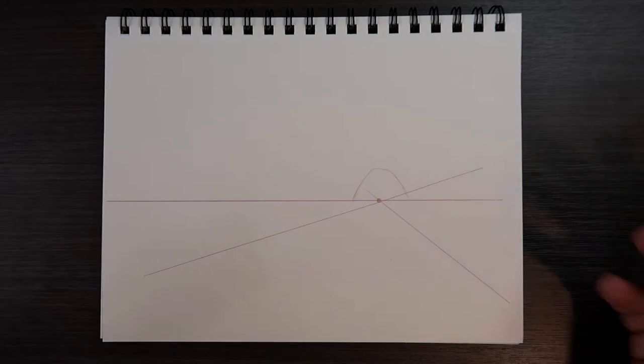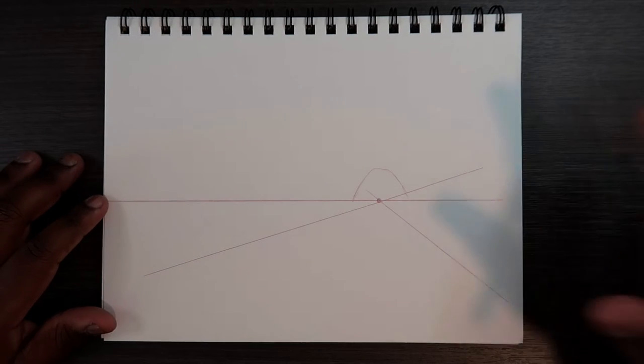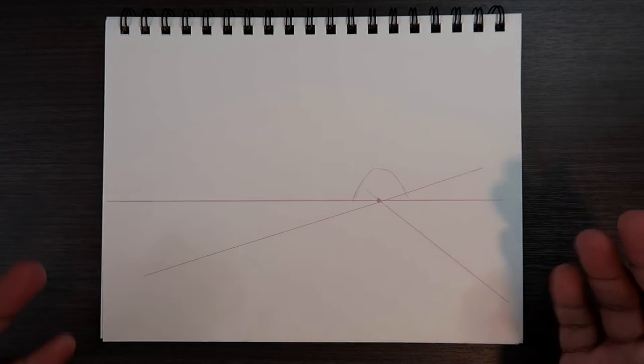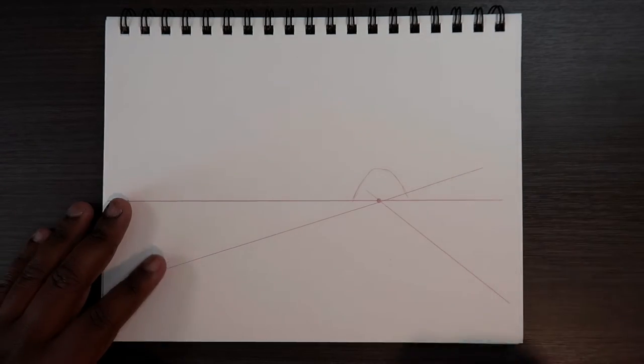So it doesn't have to be a perfect arc unless you're making like a train tunnel where it has to be perfect. But in this case, we're drawing a cave, so we don't have to make it perfect.